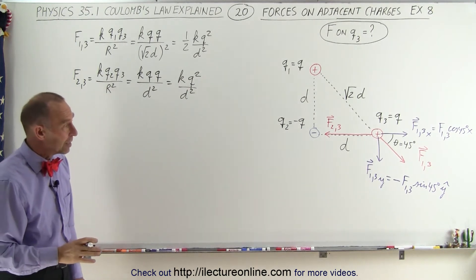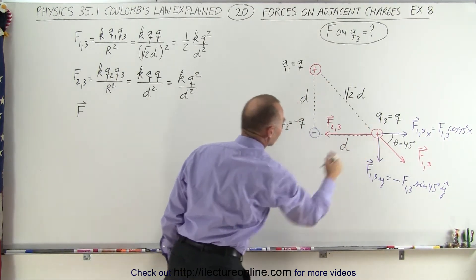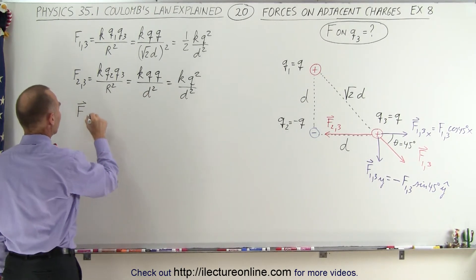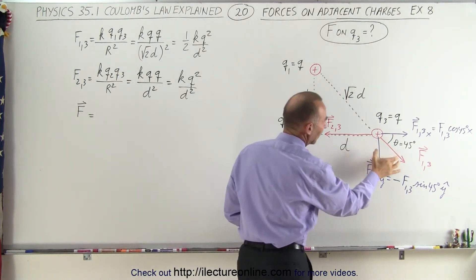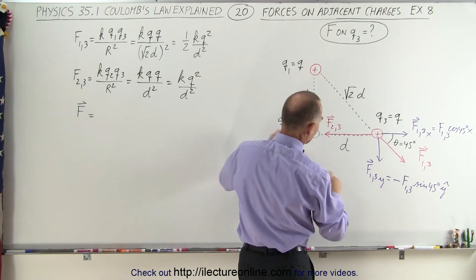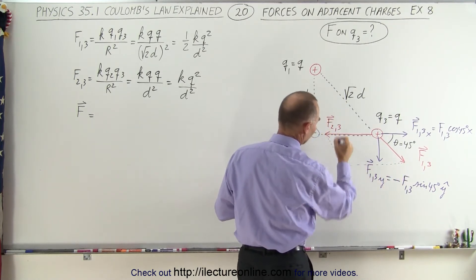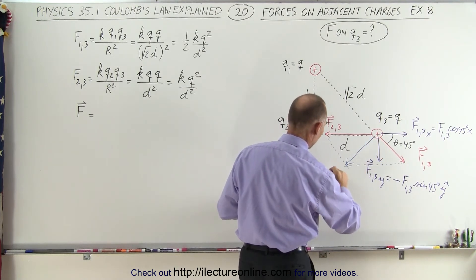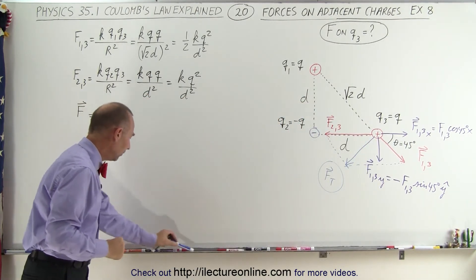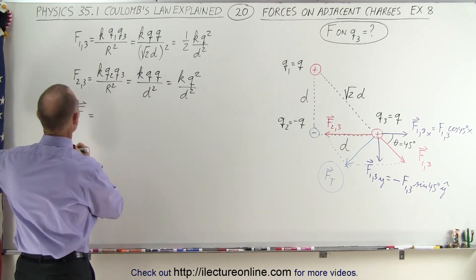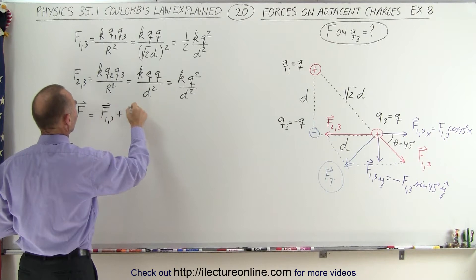Now we're ready to find the total force acting on Q3. We can also vectorially or graphically add these two forces together. If we draw a parallel line to F1,3 and a parallel line to F2,3, this here will be the total force on Q3 — graphically that becomes obvious. So that's the force we're looking for. Mathematically, the total force equals the vector sum of F1,3 plus F2,3.